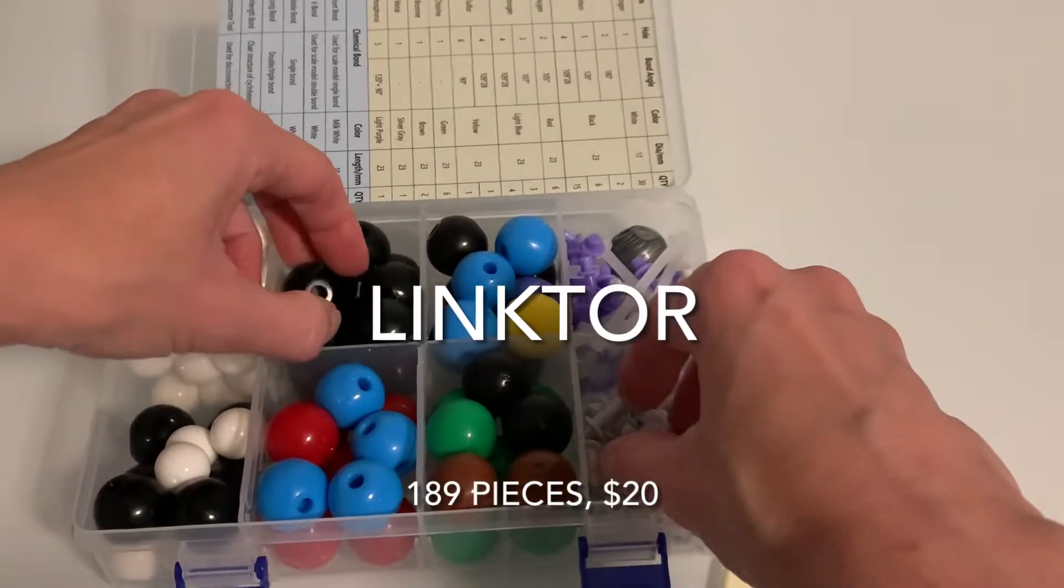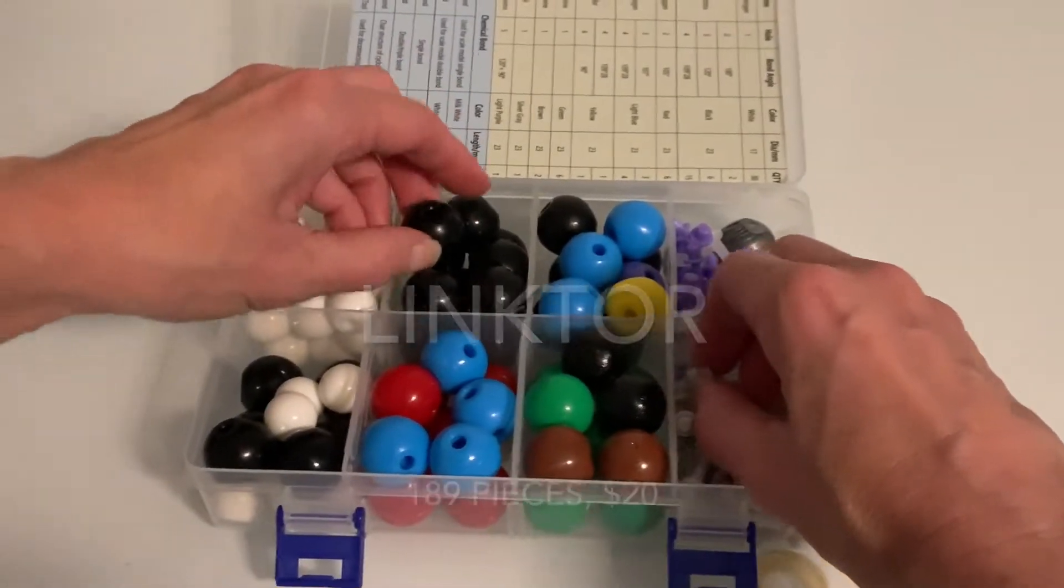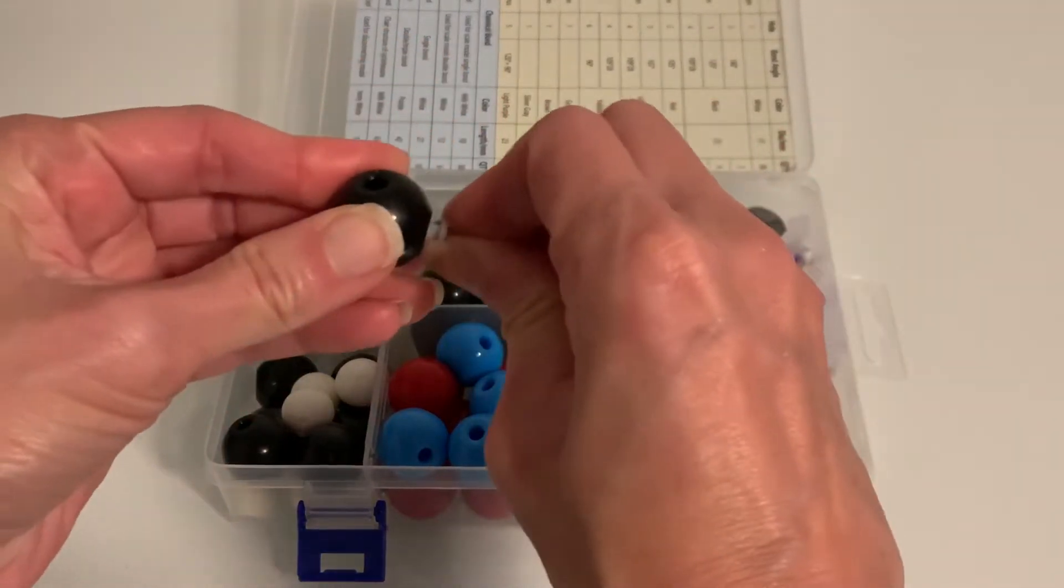The first set that I'm going to show you is the Linktour set. This particular set comes with 189 pieces and at the time of my video it cost $20.